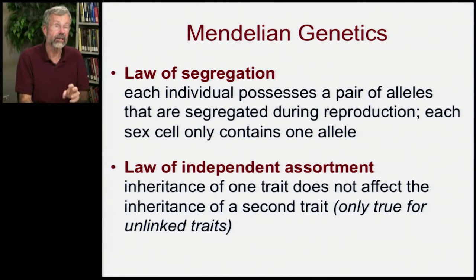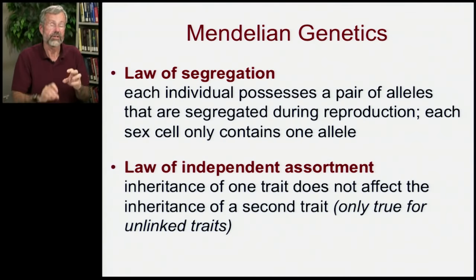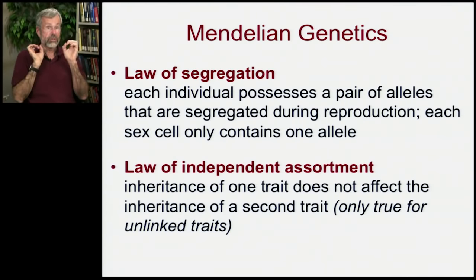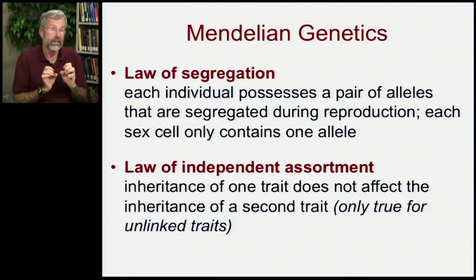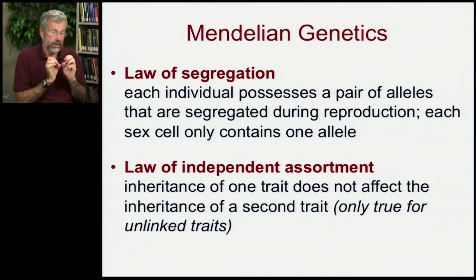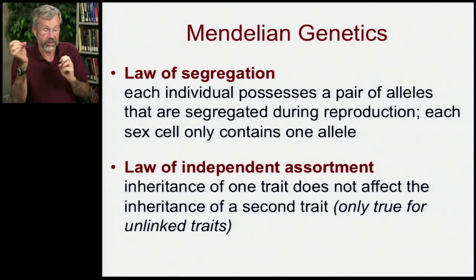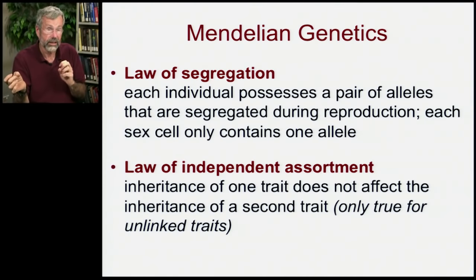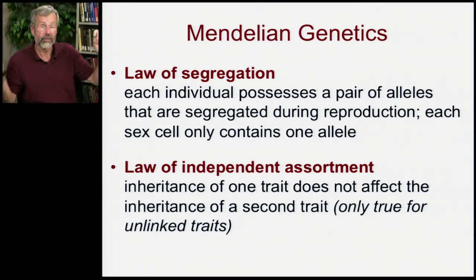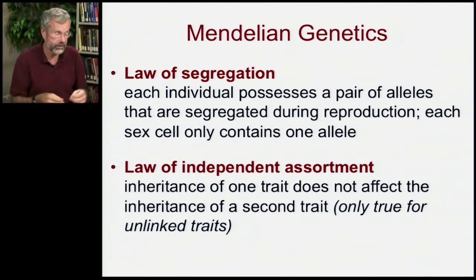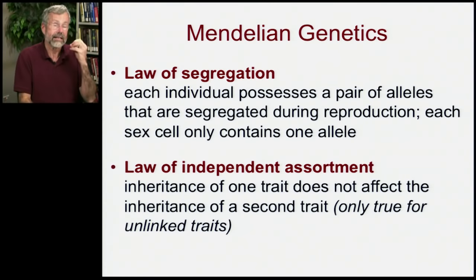Secondly was the law of independent assortment. If you're tracking two traits at a time, the inheritance of one trait does not affect the inheritance of a second trait — if they're far enough apart, now that we know about chromosomes. So those traits are passed on independently.